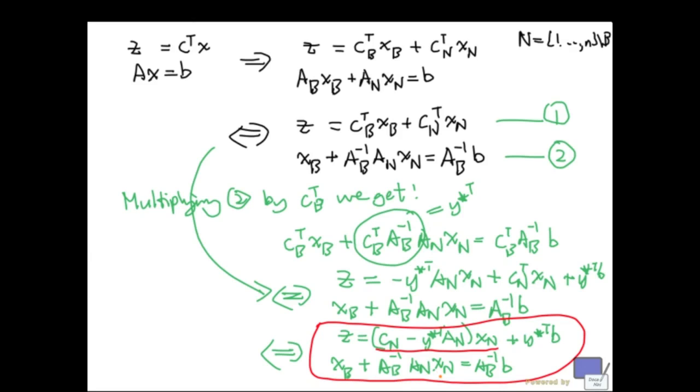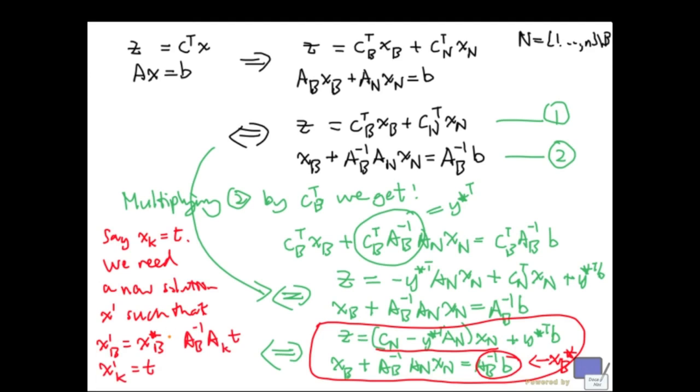Now, if I increase X K, what do I need? So, say X K is set to T for some positive T. Well, what we need is, we need a new solution, say, X prime, such that, X prime B is X star B, and X prime is 0 everywhere else.